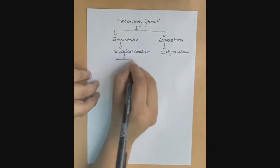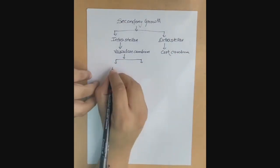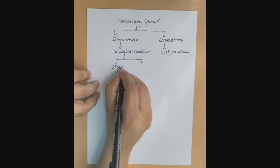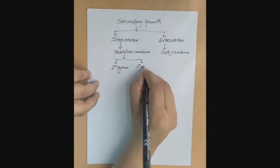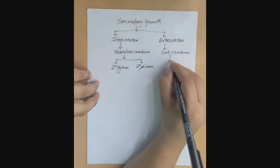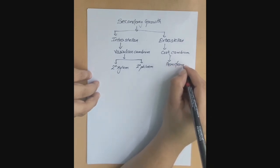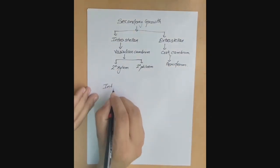This vascular cambium gave rise to two important structures: secondary xylem and secondary phloem. On the other hand, cork cambium gave rise to periderm, which is also known as cork.